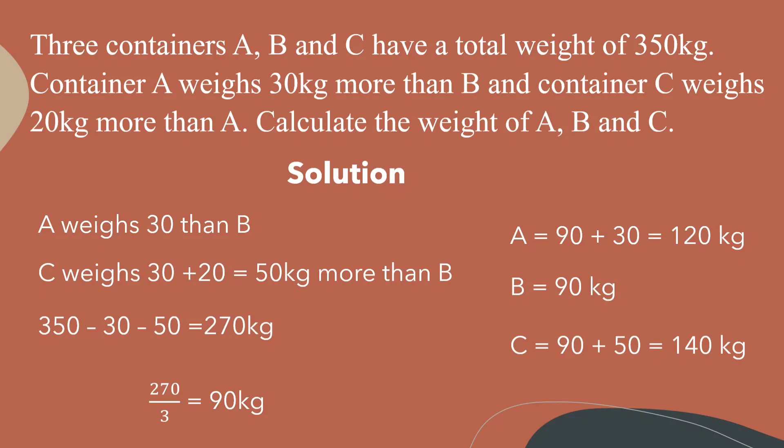Another way of double checking is that A weighs 120 minus 90 which is 30 kilograms more than B, and we can see that C weighs 140 minus 120 which is 20 kilograms more than A.